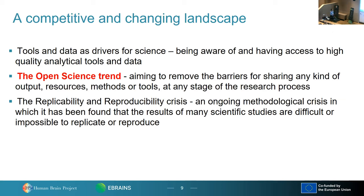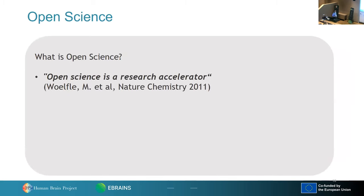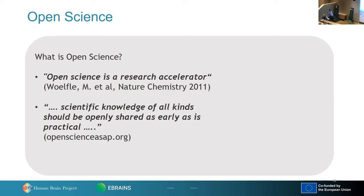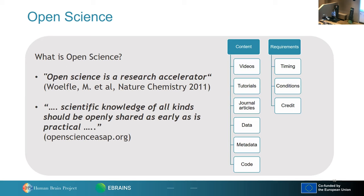Moving on to the open science trend. Is there anything you can do there, because this is a strong trend? Is it something to bother about, or should we just forget it? I think it's a research accelerator — I like that term. Or you could say it's about scientific knowledge of all kinds being openly shared as early as practical. That's quite a precise definition, and it can speak to all kinds of contents. In our context, we would emphasize the data from our instruments or measurement methods, the metadata we use to describe the data, and the code — for example, for software.